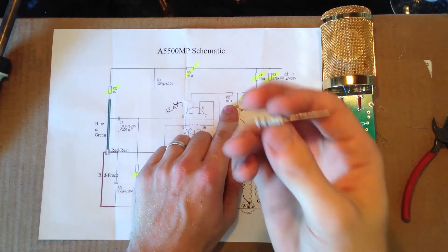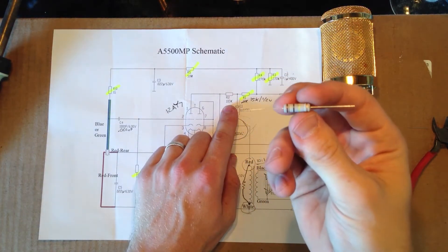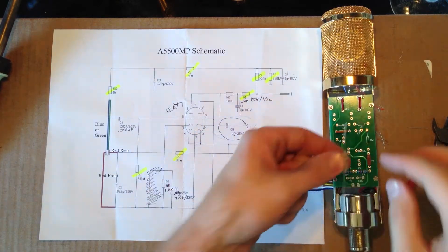Next thing we have is R2, which is a 100K 2-watt resistor. So we're going to go ahead and install this on the board.